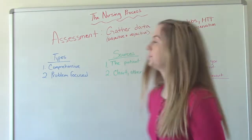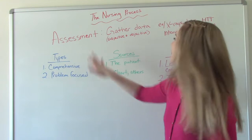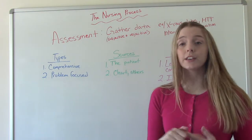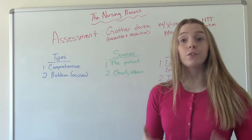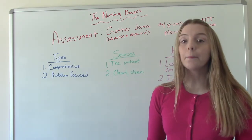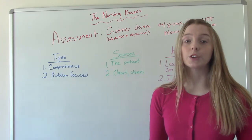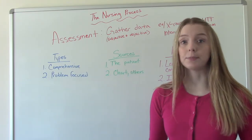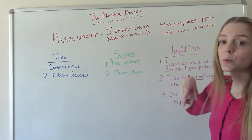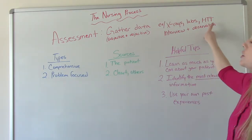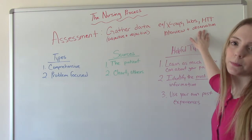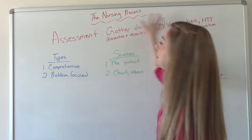Let's start with assessment — the first thing we do. Assessment is when we're gathering our data on our patient. This includes subjective information and objective information. Subjective information is anything the patient tells you. Objective information is anything that we can observe or anything that we do, like a lab test. Examples of data we gather could be from x-rays, lab results, our head-to-toe assessment, the interview, and our observation of the patient.